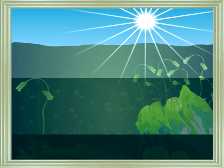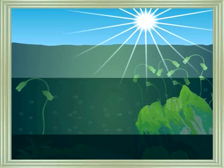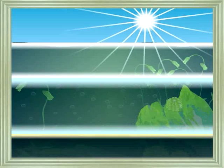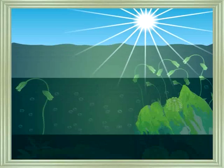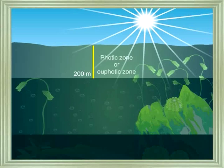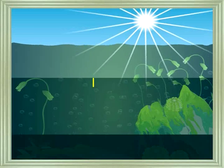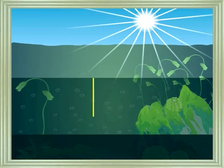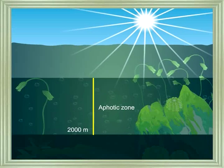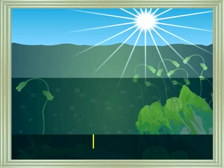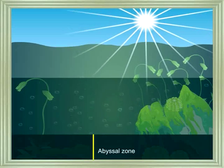Light is essential for photosynthesis. The sea can be divided into three zones according to depth: up to 200 meters is the photic or euphotic zone; 200 to 2000 meters is the aphotic zone; and beyond 2000 meters to the bottom of the sea is the abyssal zone.